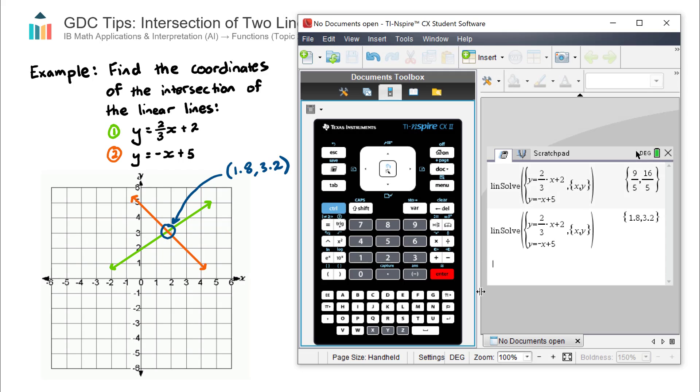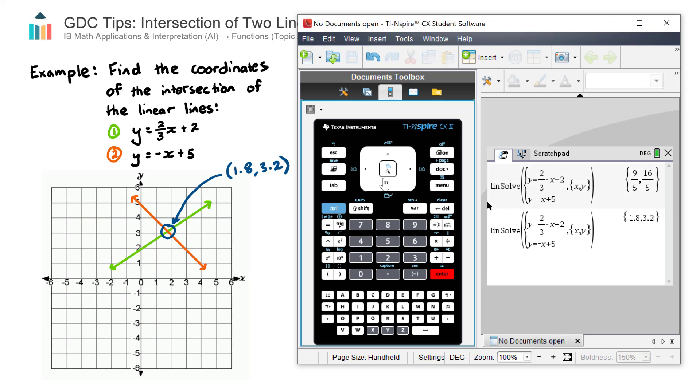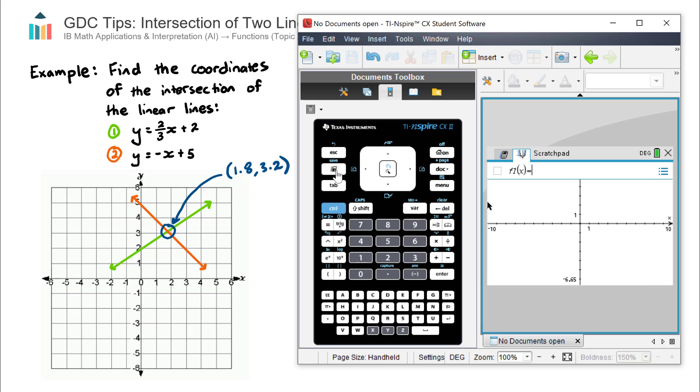Let's now look at the second method on the calculator, which is using the graphing section. So we tab across to that, which is this icon here.